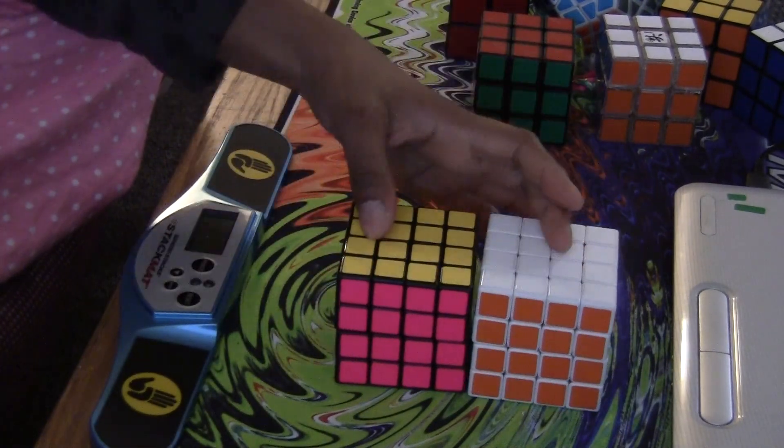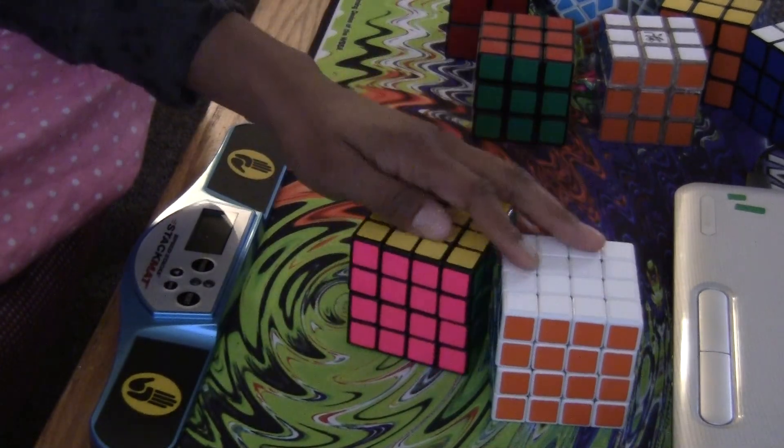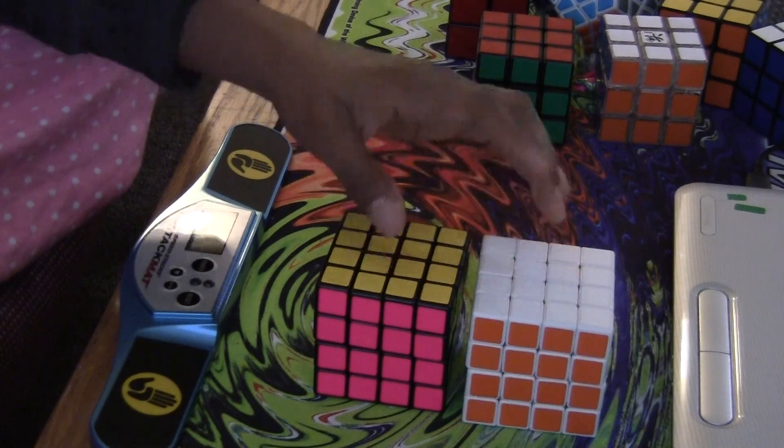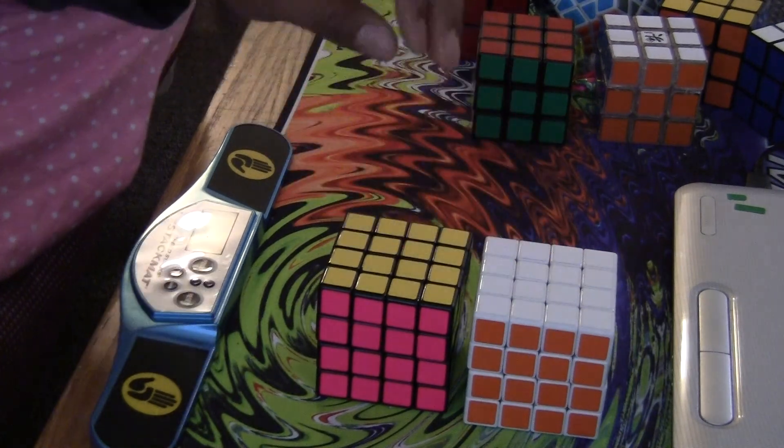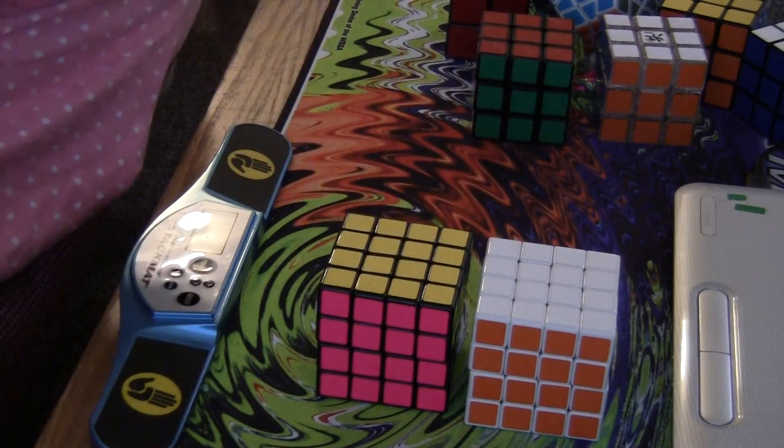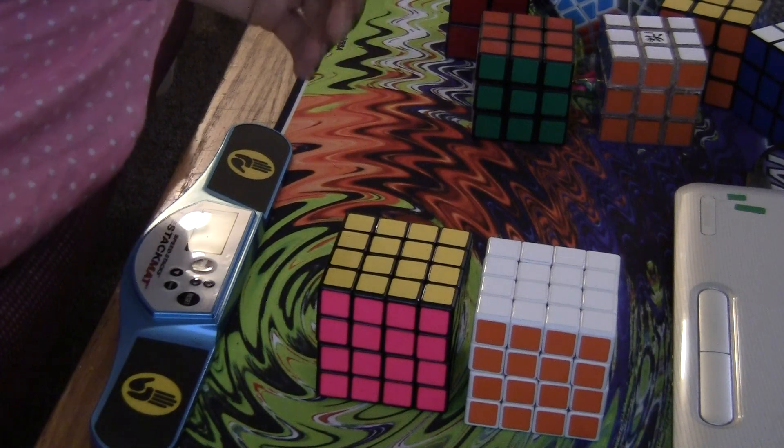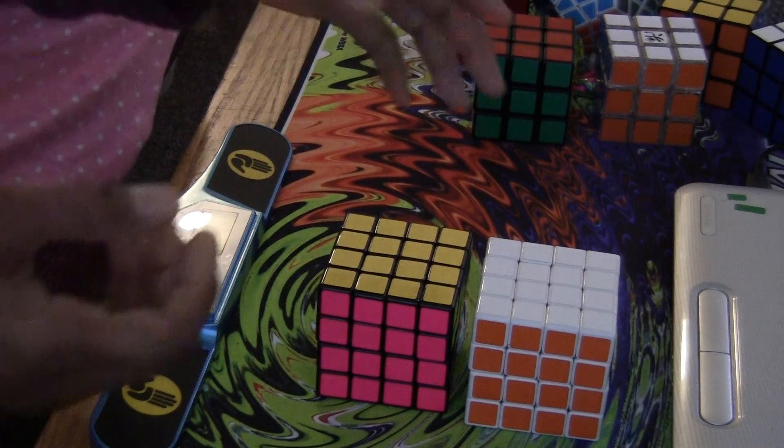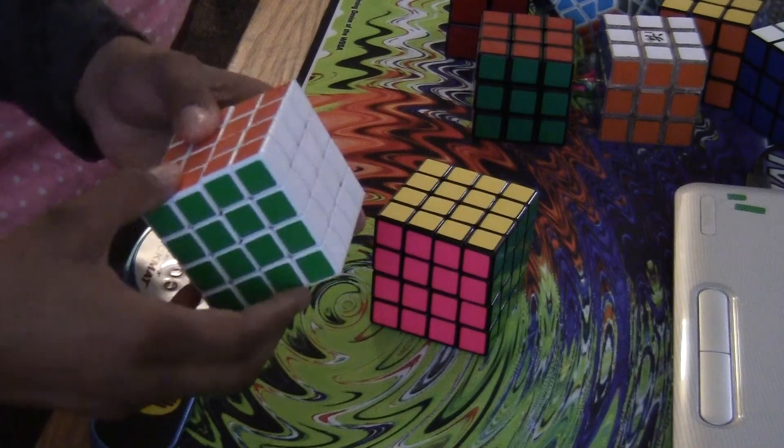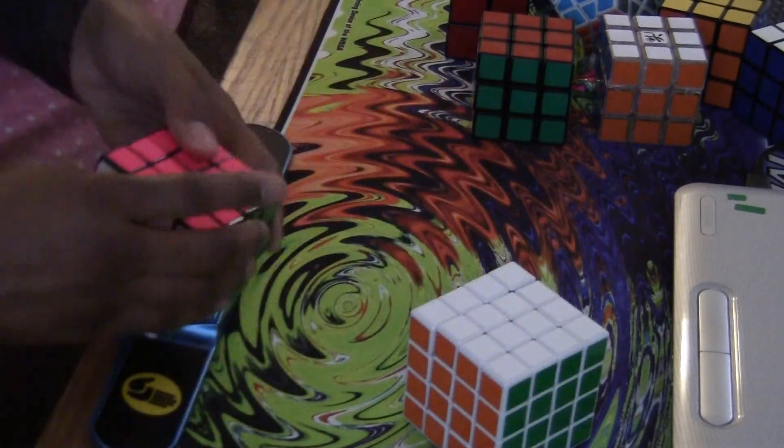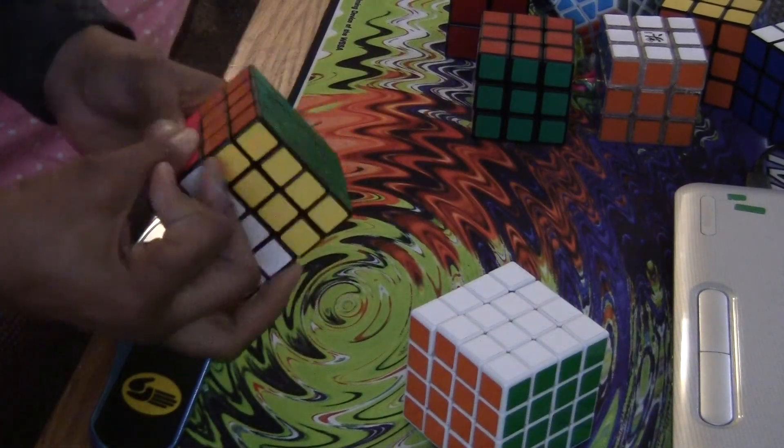The mechanisms of these are the same, they have the same shape pieces. The pieces look exactly the same in this cube as in this cube. But something is slightly different because I don't understand why the Ghost Hand feels a little different than the Sheng Xiao.